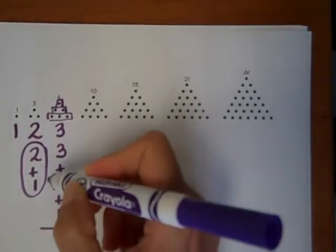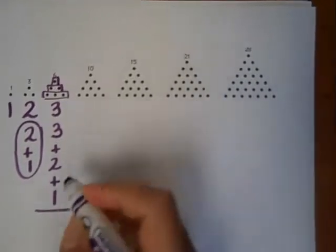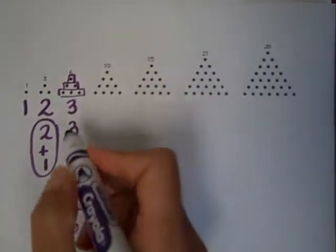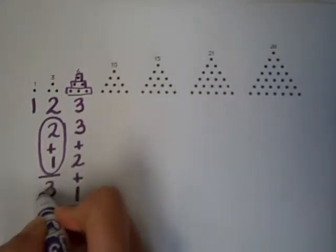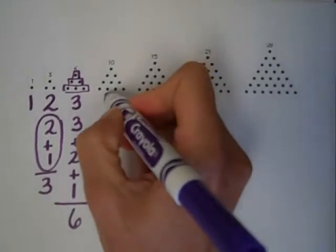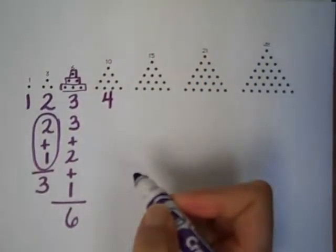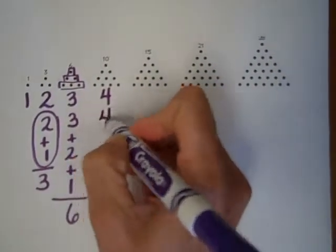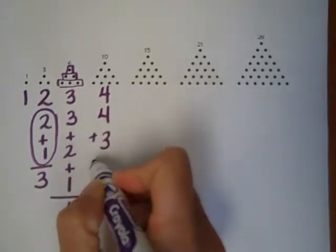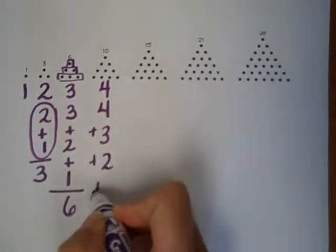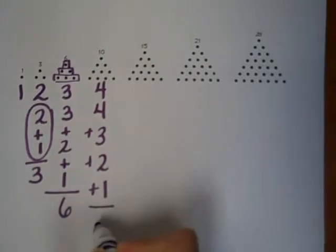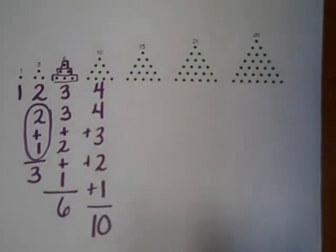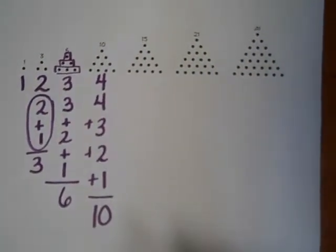So in each case we add three plus two plus one and we get six, and if we do two plus one we get three. So here is the fourth triangular number and as you can imagine it's four plus three plus two plus one and we get ten. So that's how the triangular numbers go.